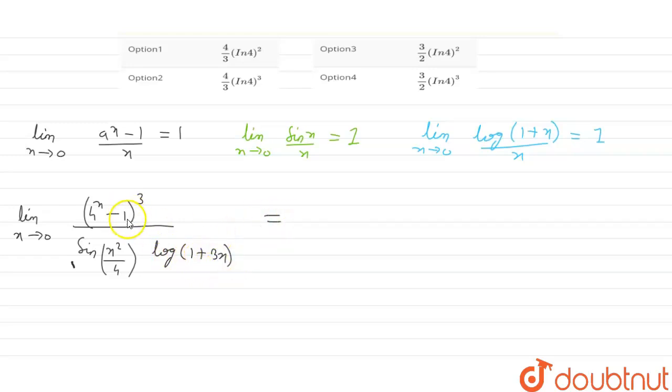We can rearrange this equation as 4 to the power x minus 1 upon x whole cube. As we have multiplied x cube in the denominator, we will multiply x cube in the numerator.